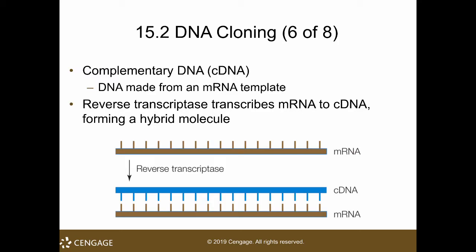Bacterial cells cannot process those introns because prokaryotes, unlike eukaryotes, do not have introns and exons. What you see in their genome is what they express. Since they cannot process introns and exons, you cannot just insert a gene cut from a eukaryotic chromosome into a plasmid vector and have the prokaryotic organism express it.